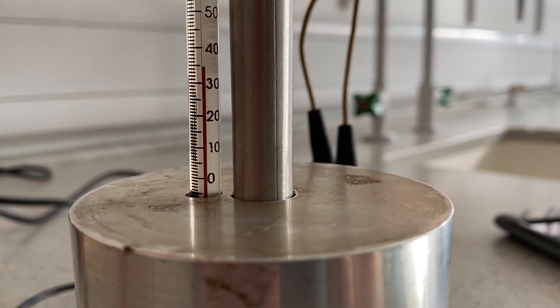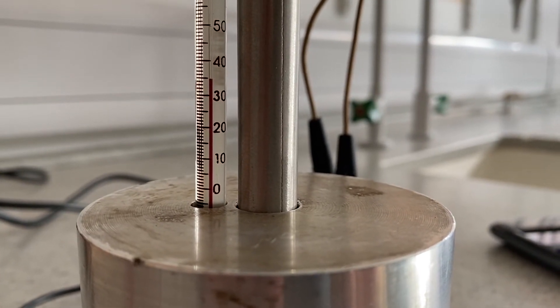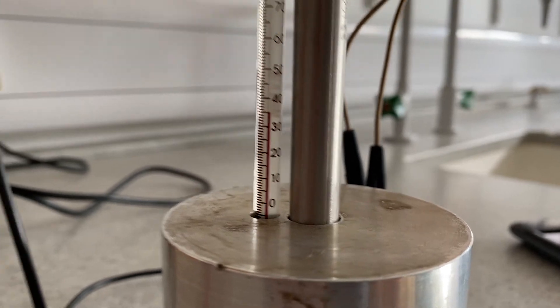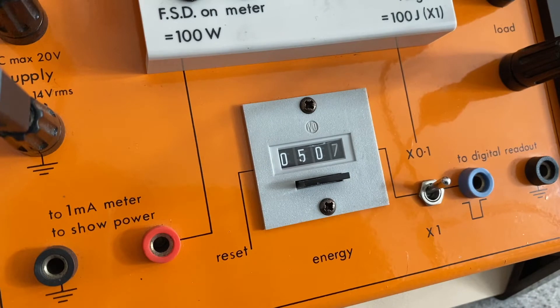We're back. So how much heat energy was required for that 5 degree rise in temperature? Well, here it is. That's 5070 joules. Remember these units are 10 joules. So 5070. Let's do some maths.